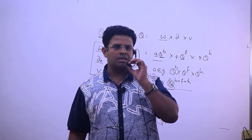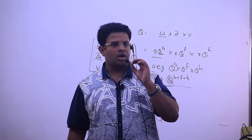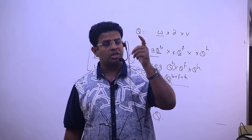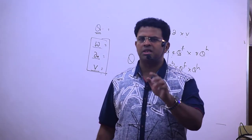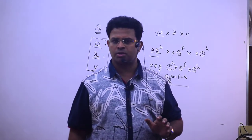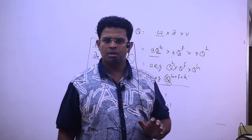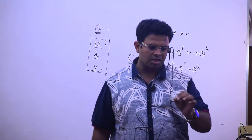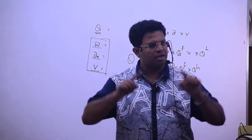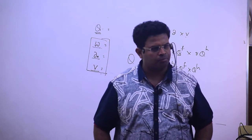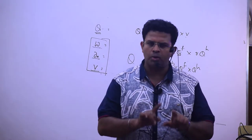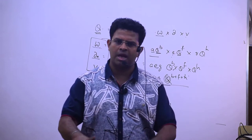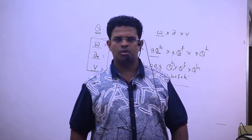A river seems to be in equilibrium through the discharge and the river loads. With respect to discharge and river load, the river makes five kinds of adjustment: width, depth, velocity, roughness, and slope.